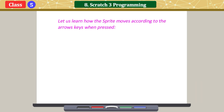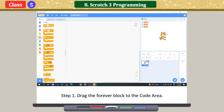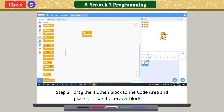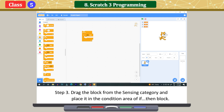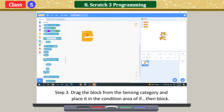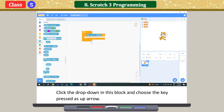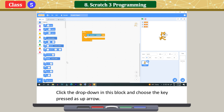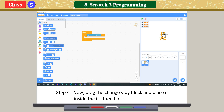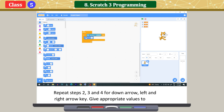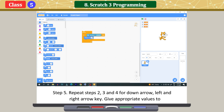Let's learn how a sprite moves according to arrow keys when pressed. Drag the Forever block to the code area. Drag an 'If-Then' block inside it. Drag a block from the sensing category and place it in the condition area — click the dropdown and choose the arrow key pressed. Drag a 'Change Y By' block inside the 'If-Then' block. Repeat steps for down, left, and right arrow keys, giving appropriate values to 'Change X By' and 'Change Y By' blocks.